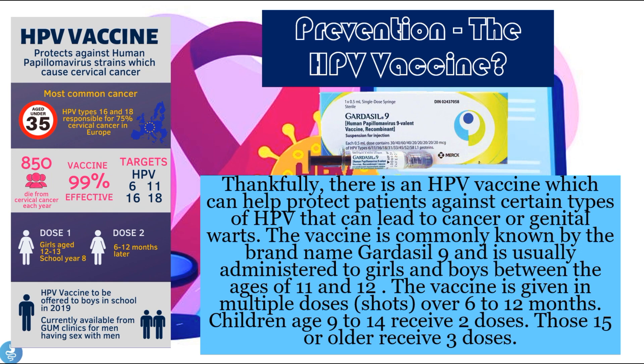The vaccine is commonly known by the brand name Gardasil-9 and is usually administered to girls and boys between the ages of 11 and 12. The vaccine is given in multiple doses over 6 to 12 months — children aged 9 to 14 receive two doses, and those aged 15 or older will receive three doses.